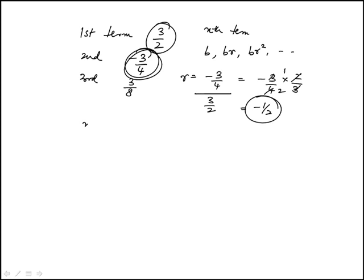So the nth term, and I do have to look at the answer choices, but I'll just construct it based on that, would be b here. The first term is b, which is 3 over 2.